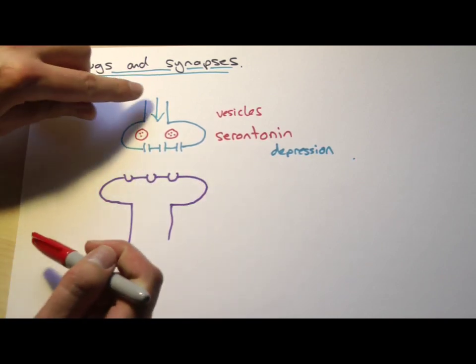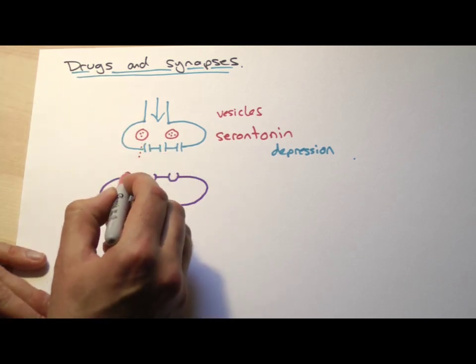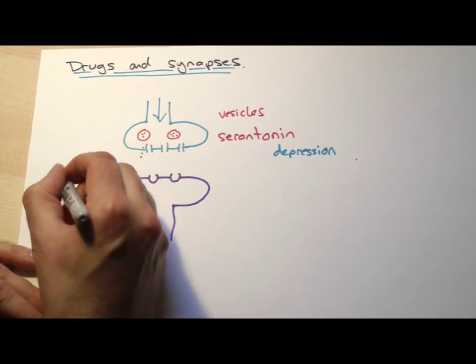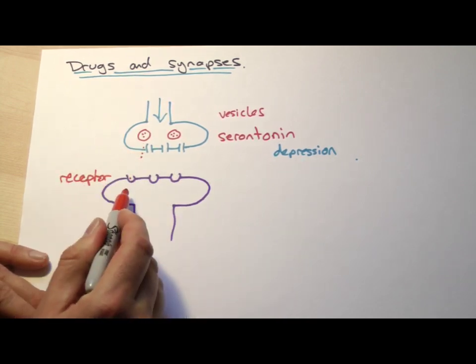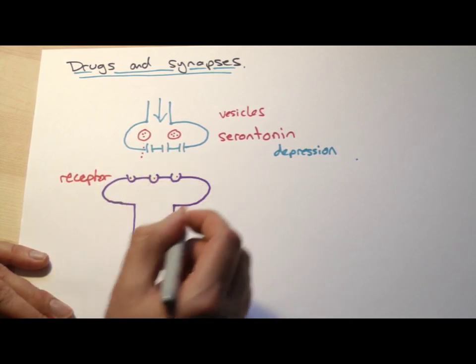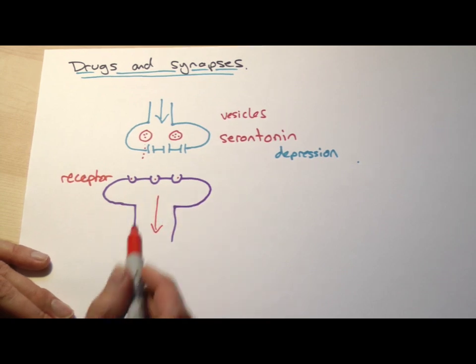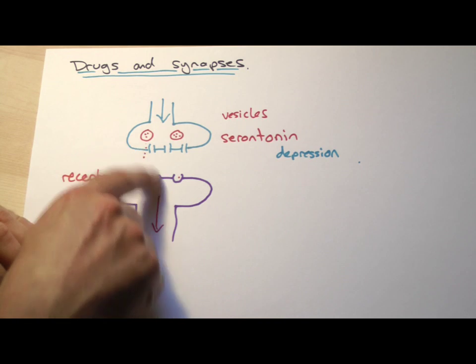Now, normally what would happen is, as the impulse comes down, this neurotransmitter would be released from here. It would find its way to these receptors on the opposite side. Remember, these are called receptors. It would fit in there. It's got the specific shape. Once enough of them were filled up, the nerve impulse would start in this neuron, and so we've passed the nerve message on.